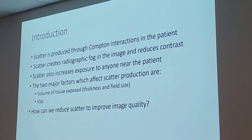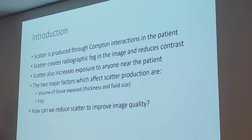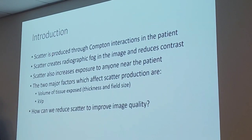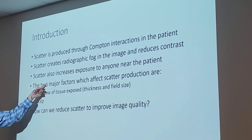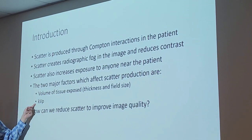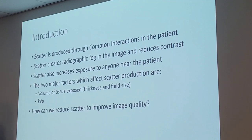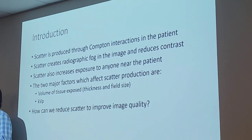Scatter production is related to the amount of tissue exposed, whether it's sideways via light field size or depth via tissue thickness. The other big factor affecting scatter is kVp. As kVp increases, scatter also increases. That's why if you have an image with a lot of scatter, you don't want to increase your kVp — that's only going to add more scatter to your image.